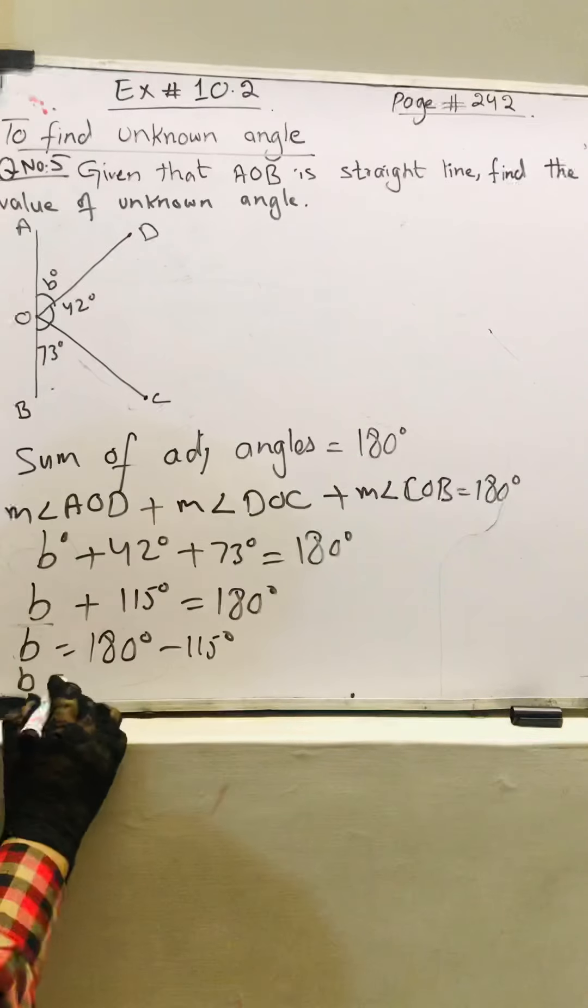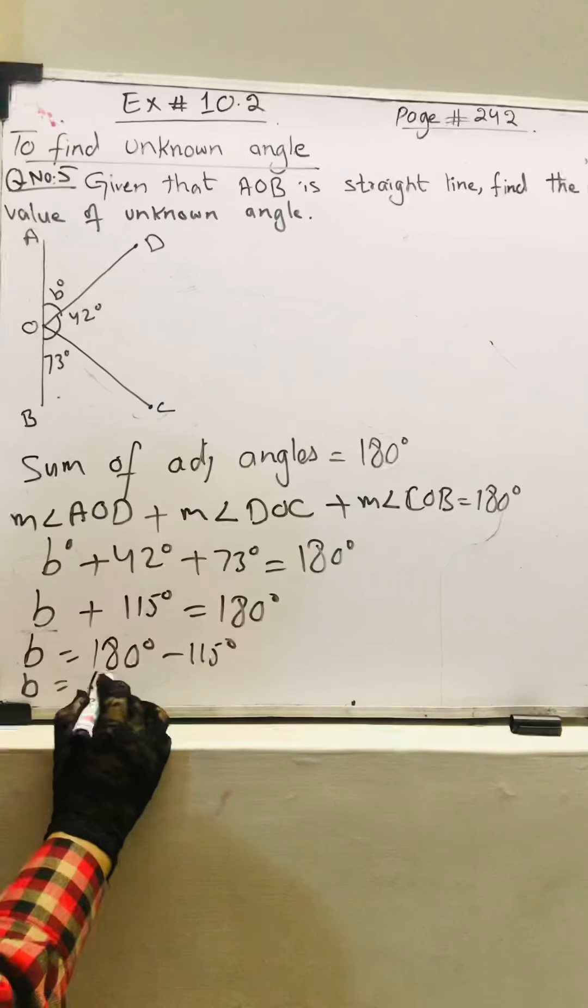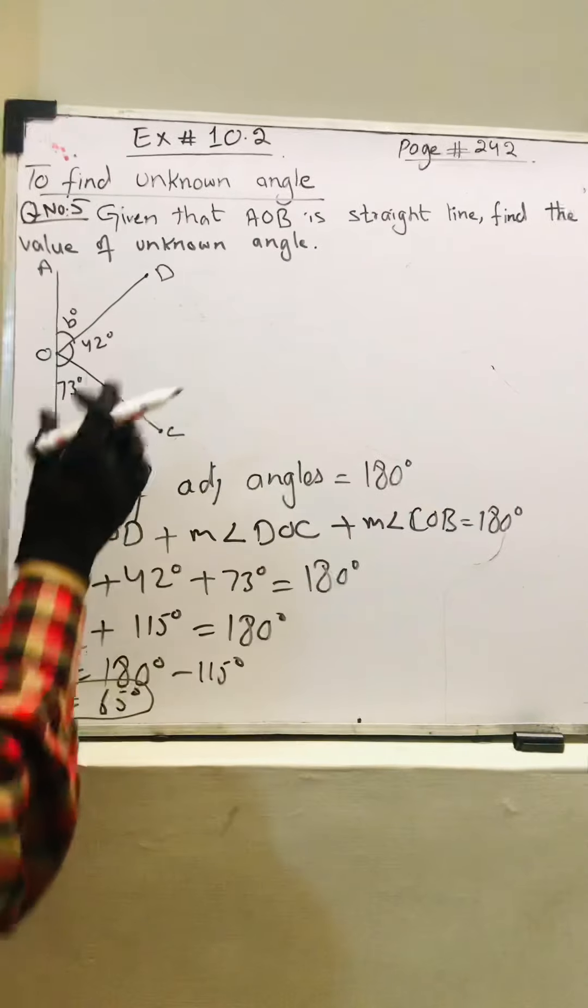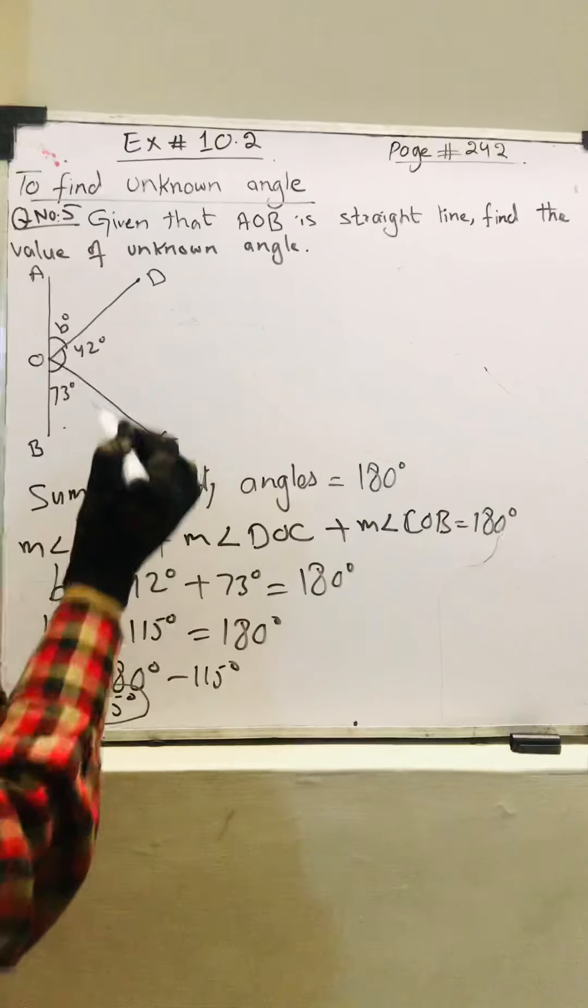180 degrees minus 115 degrees. So we have plus minus minus. When I subtract 115 from 180, I'm left with 65 degrees. It means the unknown value of this figure is 65 degrees.